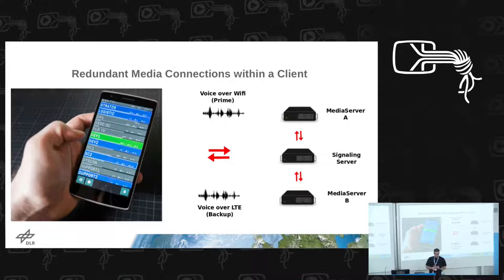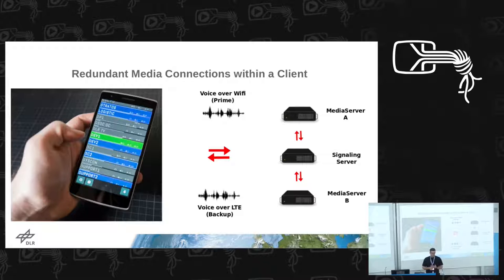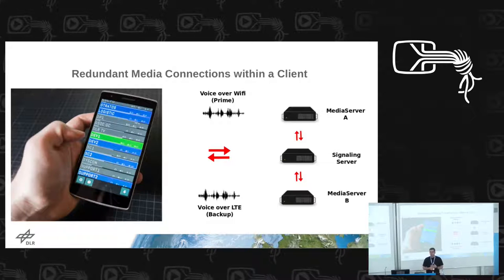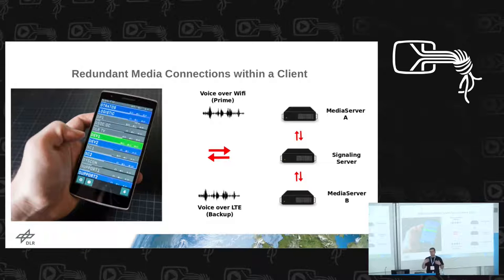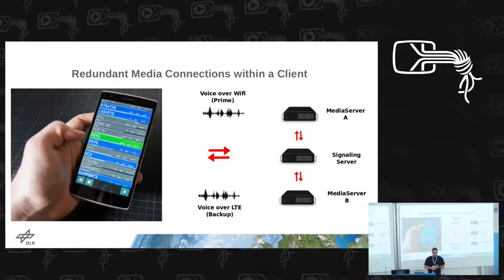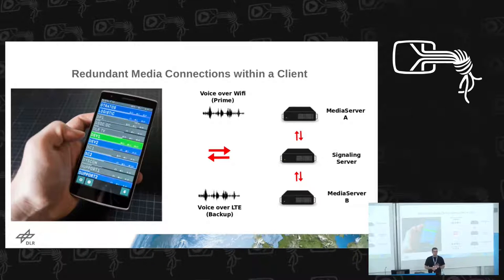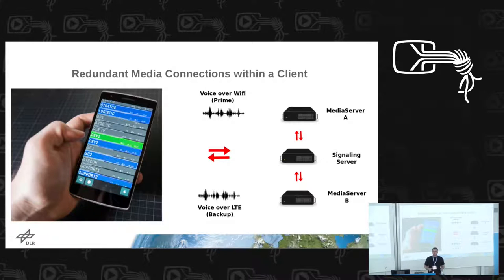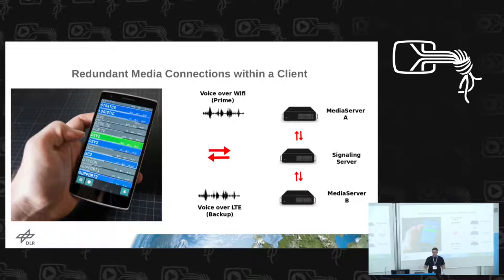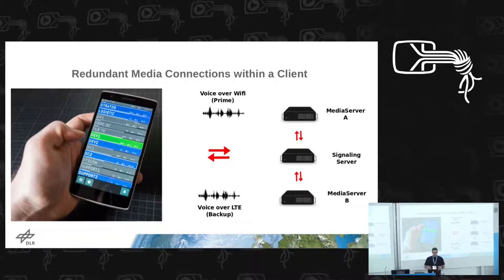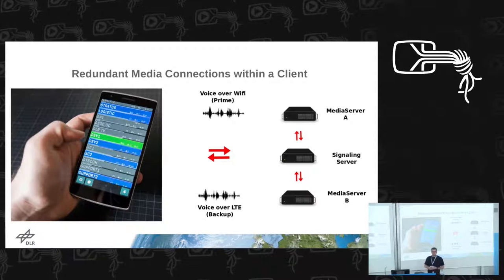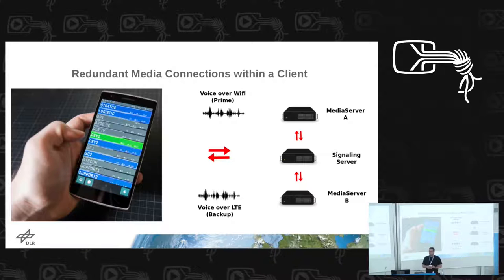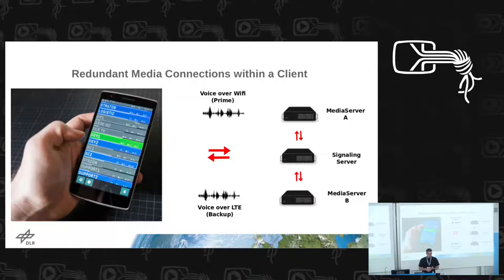This is also interesting for universities that want to listen to communications for an experiment running elsewhere but don't have money for a dedicated voice terminal or infrastructure. With just a telephone and a web page, they can communicate with the space operations center. We are also working on using redundant media connections - routing voice over WiFi as the primary connection with a fallback over LTE, so that if the whole internal network goes down, you can still communicate with your partner in Houston over the public LTE infrastructure as a backup channel.